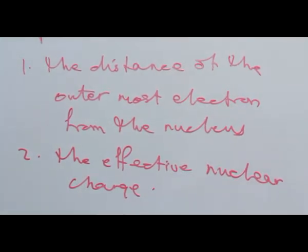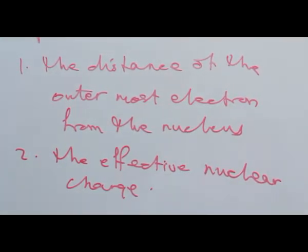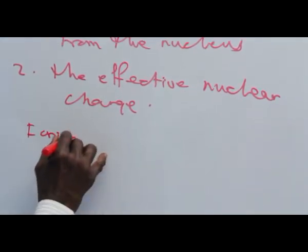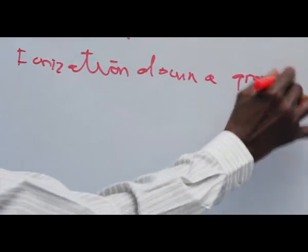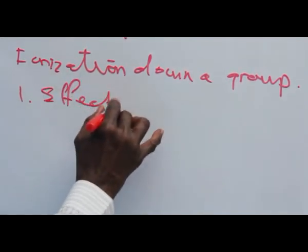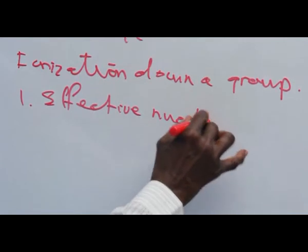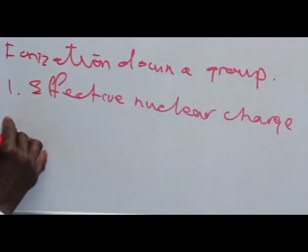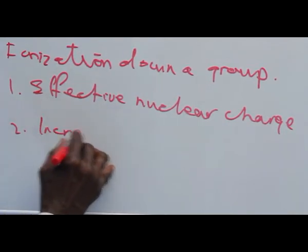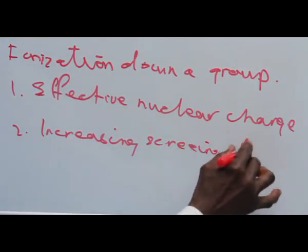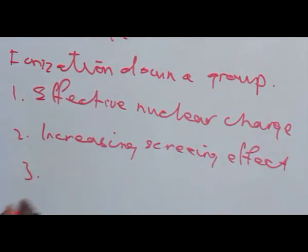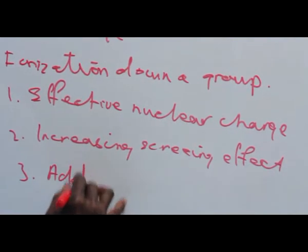The value of the ionization energy down a group is influenced by three factors. One, effective nuclear charge. Two, increasing screening effects. Three, addition of one more shell.